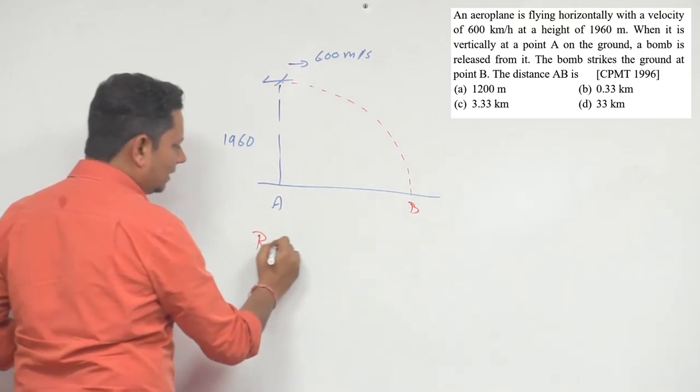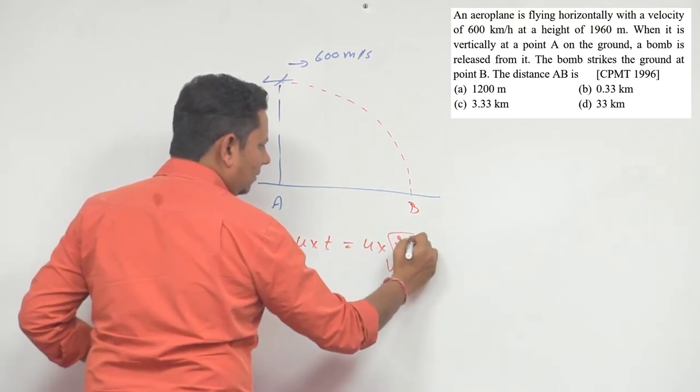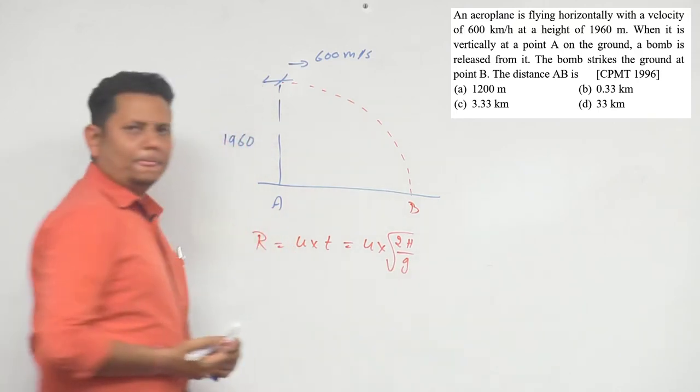Directly you can use the formula. Range will be equal to U multiplied by time. Or time we can write as square root of 2H by G.